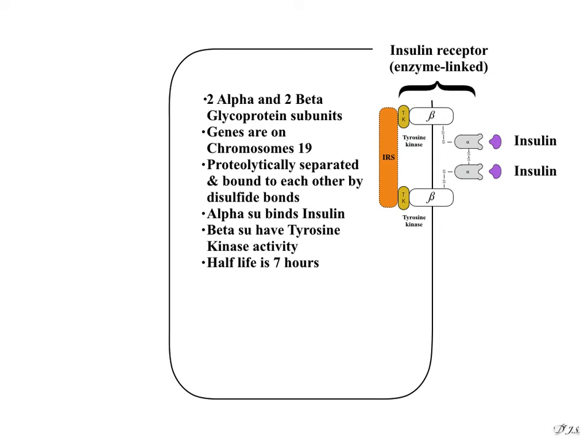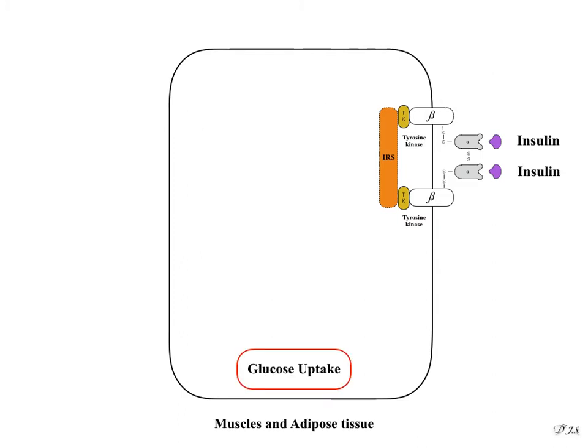Two alpha units are outside the cell membrane, which bind the insulin, and 2 beta units are inside the cell membrane. These attach with tyrosine kinase and insulin receptor substrates. Both the tyrosine kinase and IRS activate other proteins by phosphorylation, leading to myriad cellular effects.